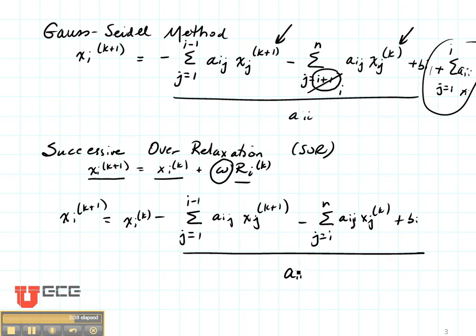And then I'm going to divide all of these by Aii. So this is set up in such a way that I can define a residual. This right here is going to be my residual value. And then all I'm going to do is multiply that by omega in order to define the successive over relaxation method.